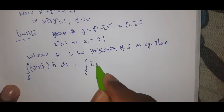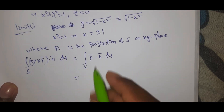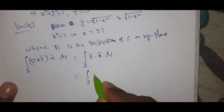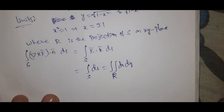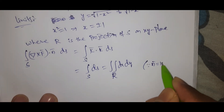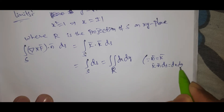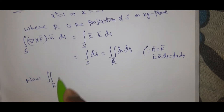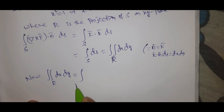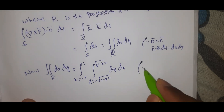Since n̄ = k̄ for the upper hemisphere and curl F̄ = k̄, we have curl F̄ · n̄ = 1. So ∬S curl F̄ · n̄ dS = ∬R dA = ∫₋₁¹ ∫₋√(1-x²)^√(1-x²) dy dx, which equals the area of the unit circle projected on the xy plane.